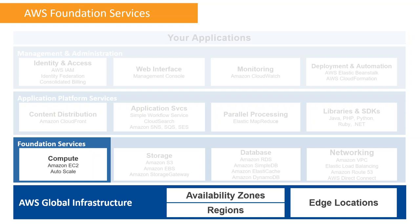Today's session is going to focus on the foundation services, especially the compute, storage, database, and networking layer - the second tier on this matrix diagram. We will start off with the compute services. In compute there are three main services we will focus on: EC2, Auto Scaling, and Lambda.